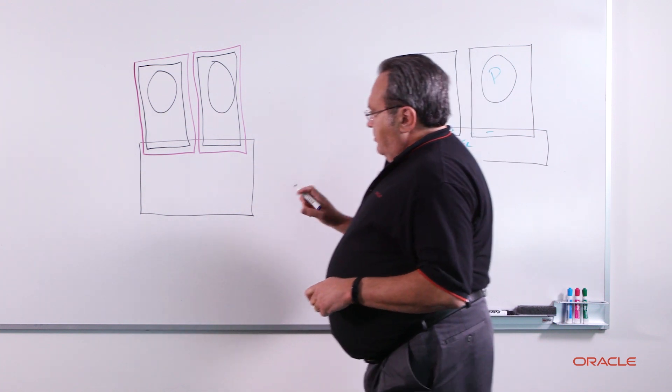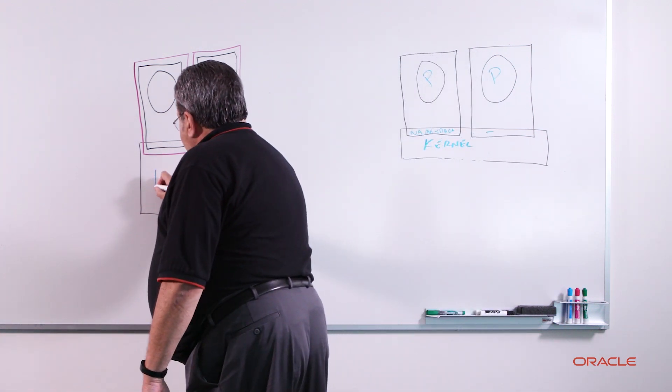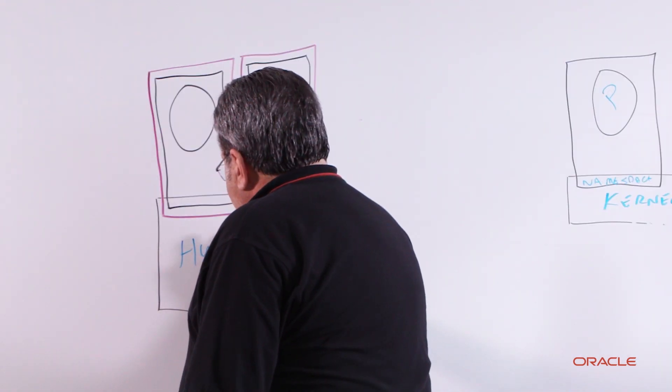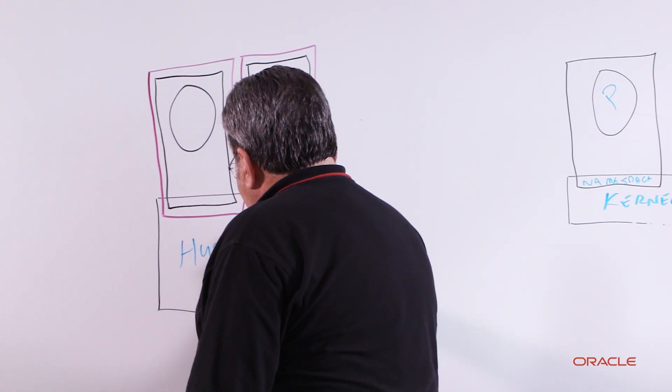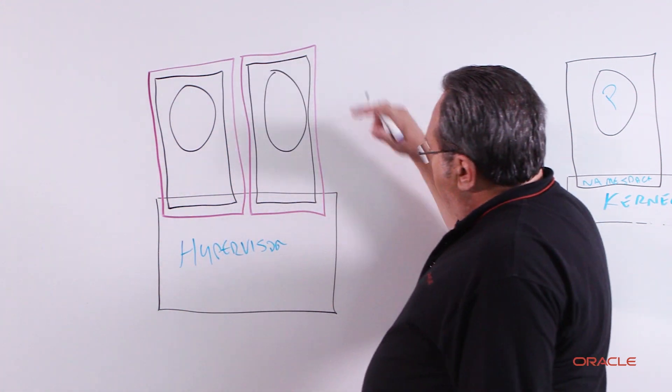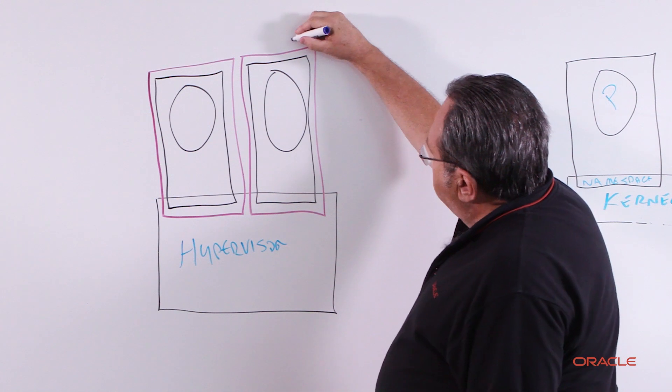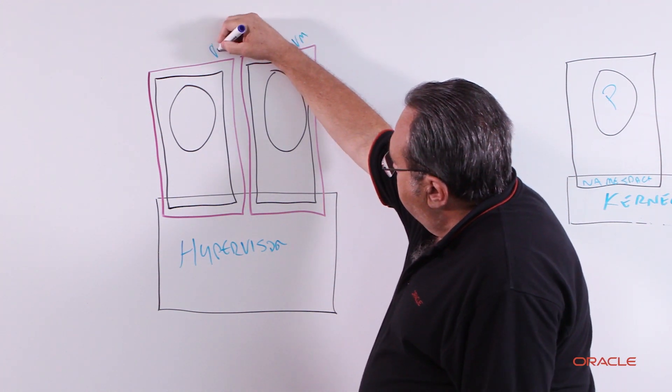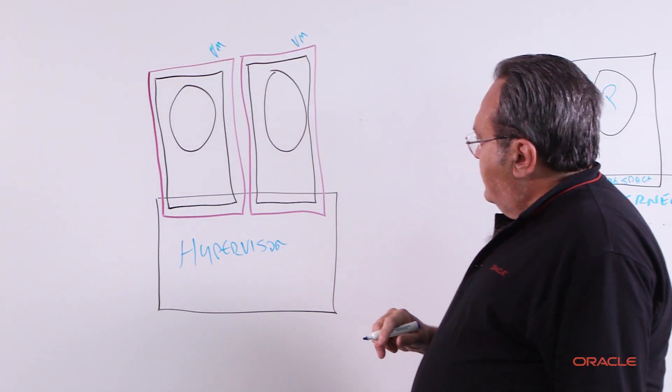Instead of just a kernel, what we have everything running down here is a hypervisor. So the things that are purple are actually virtual machines with all of its associated isolation.